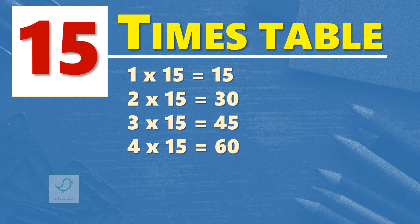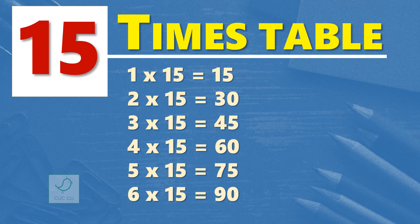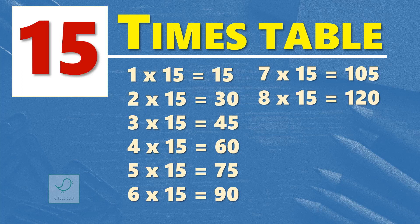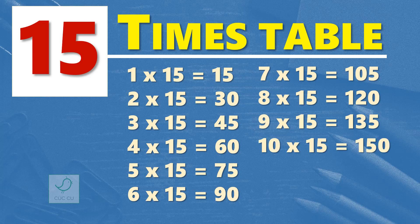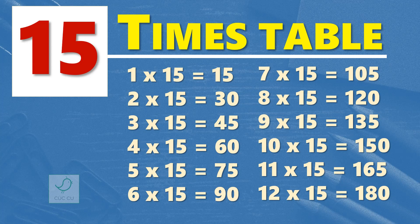Five times 15 are 75. Six times 15 are 90. Seven times 15 are 105. Eight times 15 are 120. Nine times 15 are 135. Ten times 15 are 150. Eleven times 15 are 165. Twelve times 15 are 180. One more time.